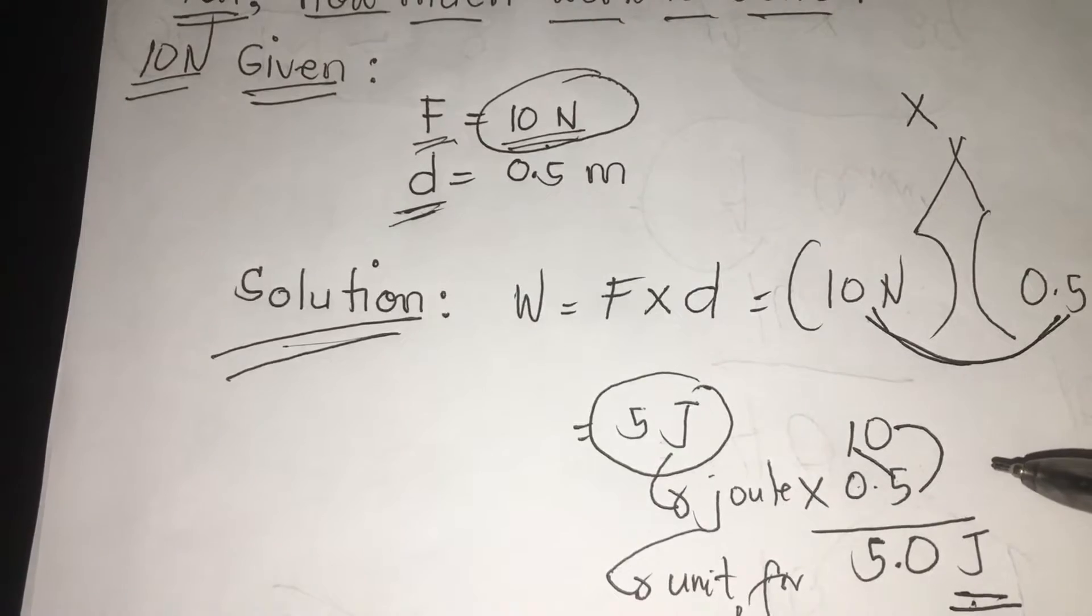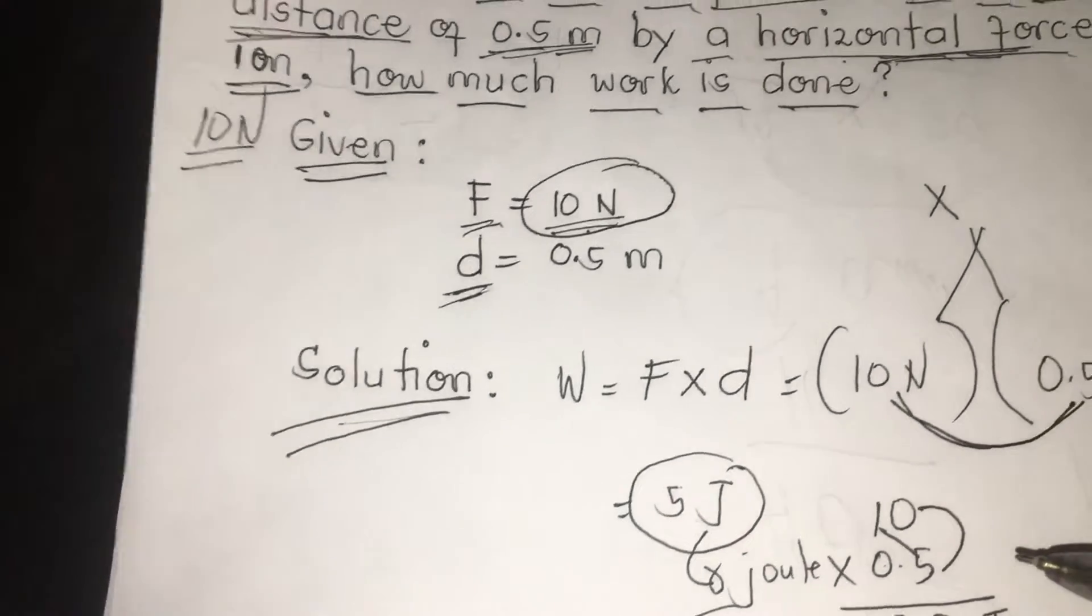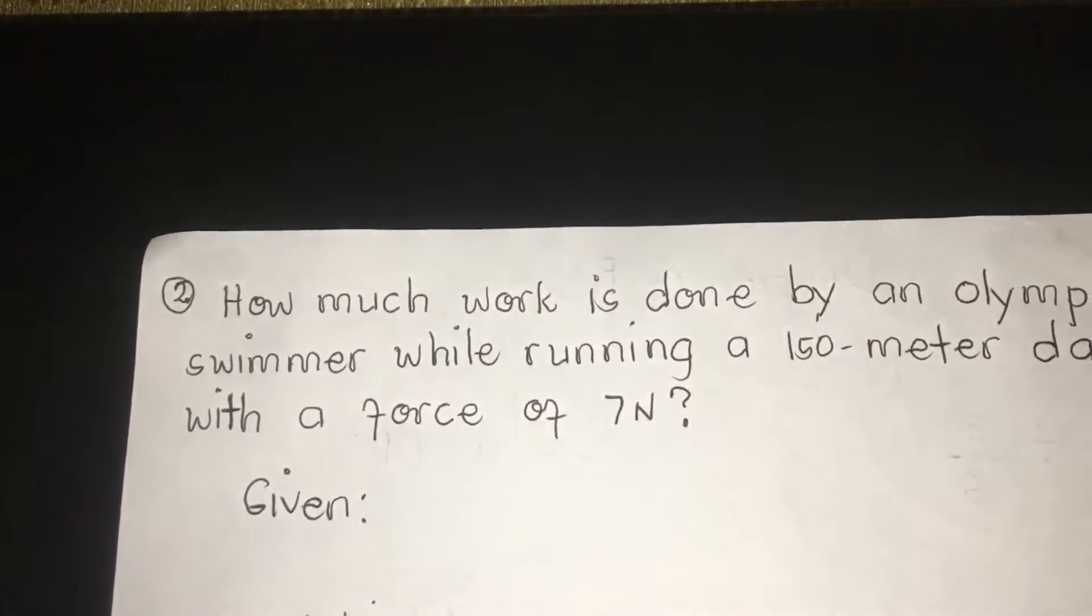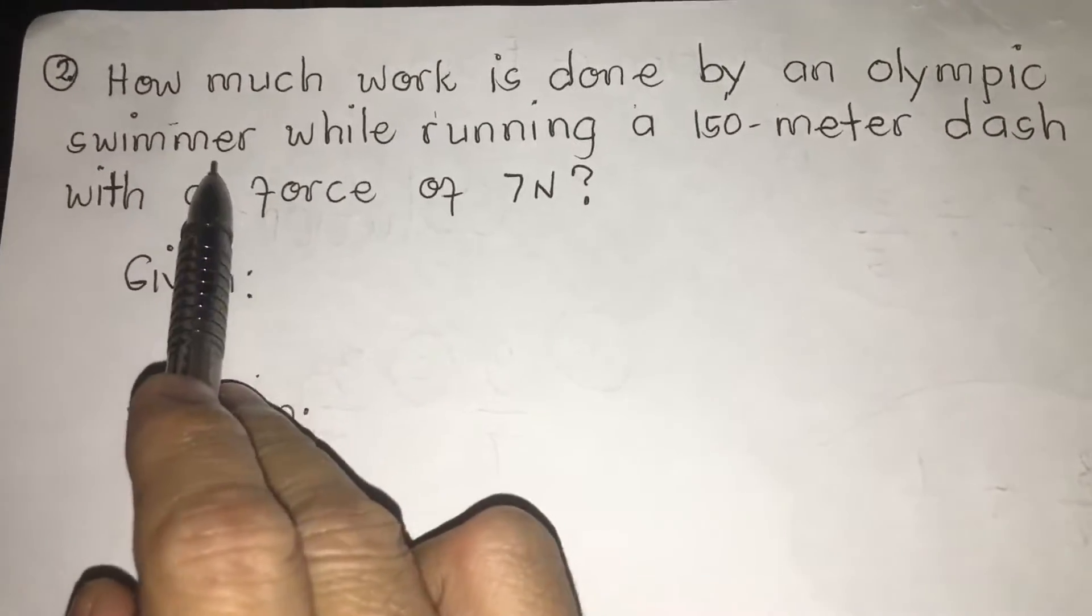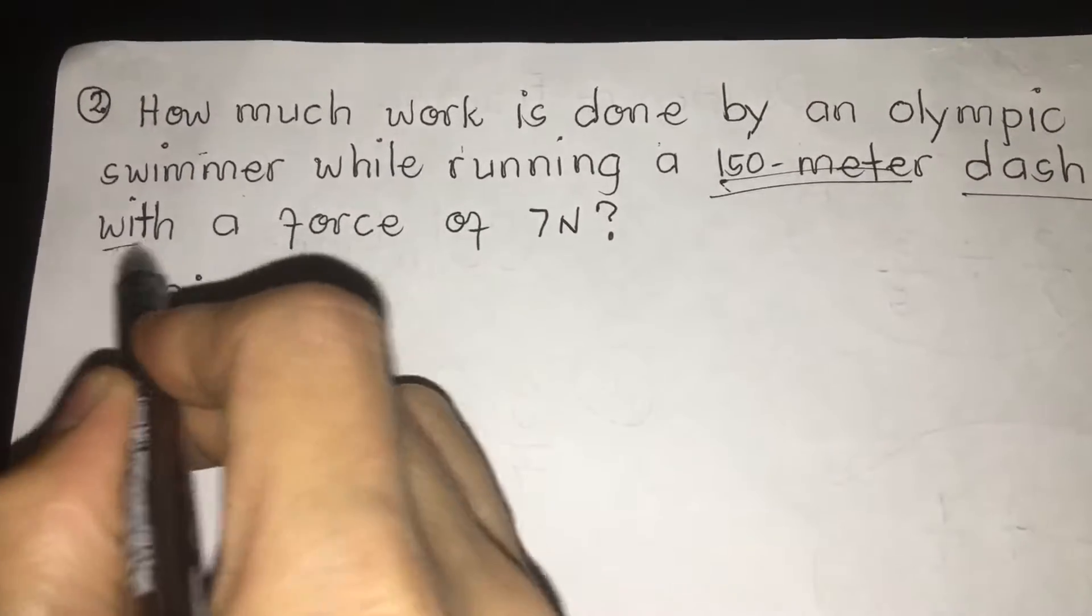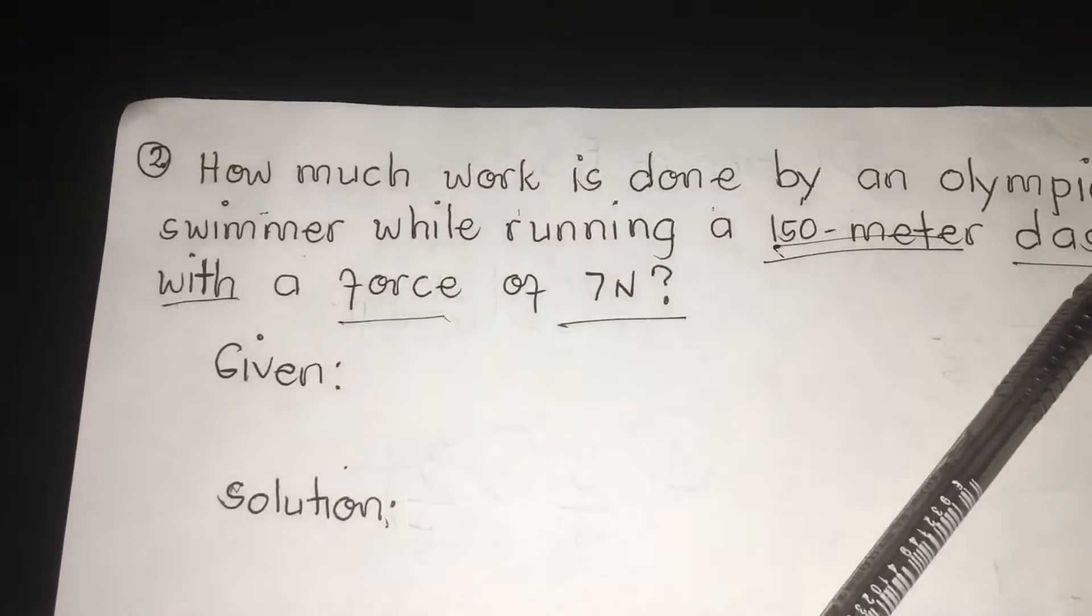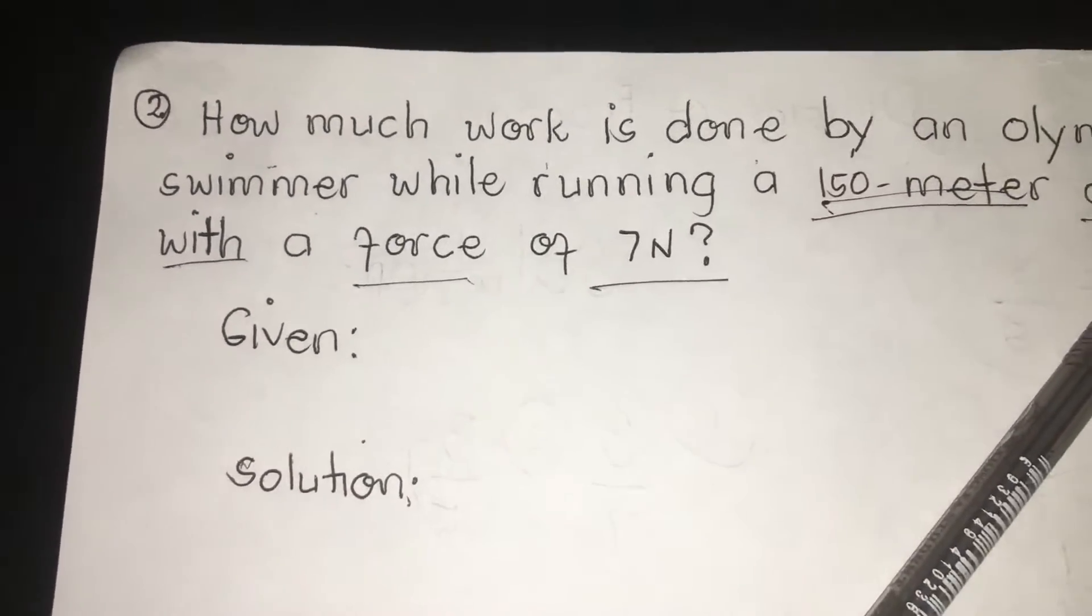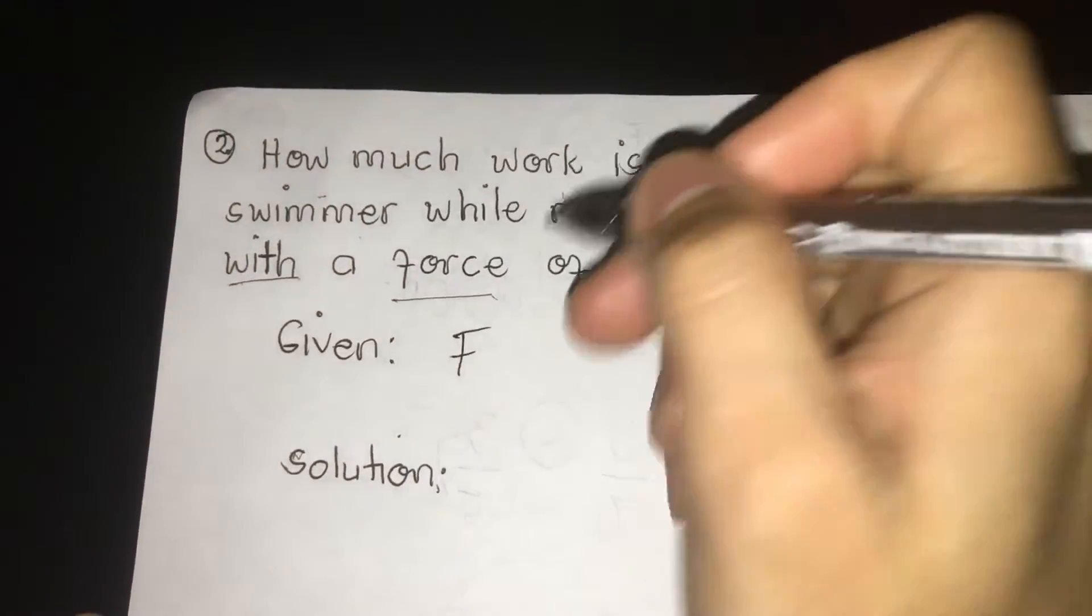Next, I will give you another exciting exercise on how you are going to solve the following problems. Number 2, we have how much work is done by an Olympic swimmer while running 150 meter distance with a force of 7 N. So try to analyze first class, how we are going to solve it. We are going to find first the given.